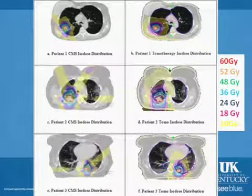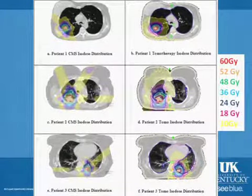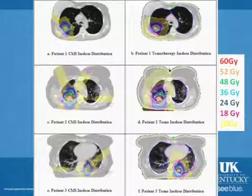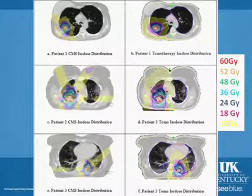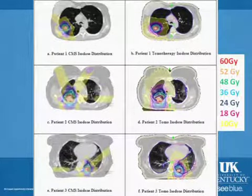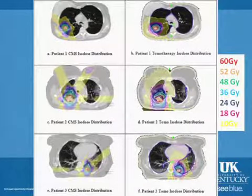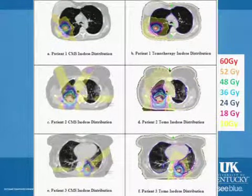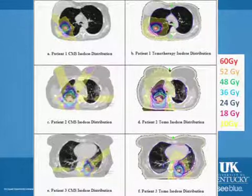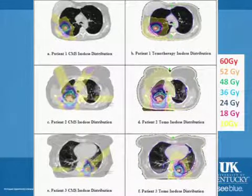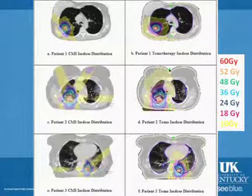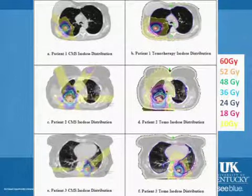Notably, you can see that the low-dose cloud — the thin gray cloud — is much larger for tomotherapy than for the conventional treatment. This is because you treat from a large number of angles, so the low-dose volume delivered to the patient is greater with tomotherapy machines. I will discuss this more later.